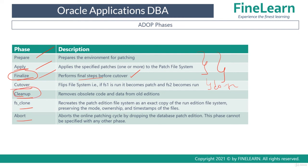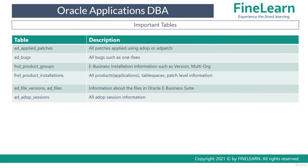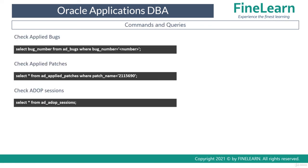The important tables related to ADOP are AD_APPLIED_PATCHES, AD_BUGS (the difference between them was explained in the previous lesson), FND_PRODUCT_GROUPS, FND_INSTALLMENTS, and AD_ADOP_SESSIONS. In this lesson we'll see examples of queries and look at AD_ADOP_SESSIONS in detail.